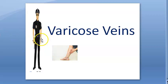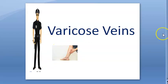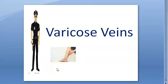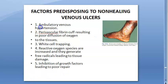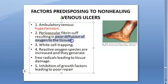Why won't these ulcers heal? Because these people have ambulatory venous hypertension — they're always standing. The blood is not able to return to the heart; the valves would have become weak or even absent. The calf muscles are supposed to contract and pump the blood back to the heart. This causes venous hypertension leading to non-healing, along with perivascular fibrin cuff resulting in poor diffusion of oxygen to these tissues.